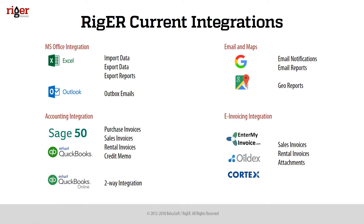And with QuickBooks Online, we have two-way integration. It means that we can take data from QuickBooks and also send data back to QuickBooks. Email and map give us an opportunity to do email notifications and reporting, and geo-reports allow us to integrate with Google Maps, place our equipment, and show all jobs in Google Maps.